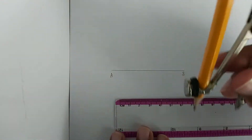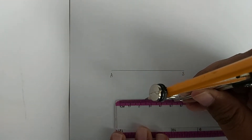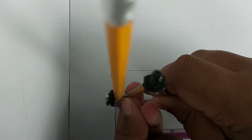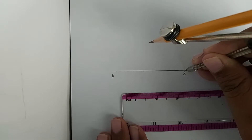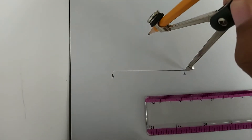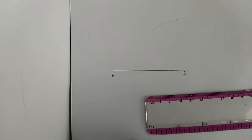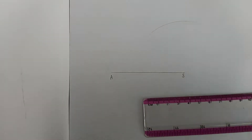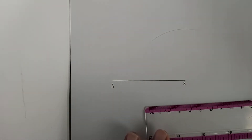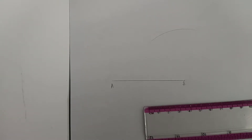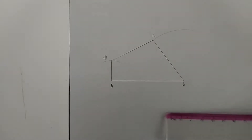BC is 50 mm, so I'm going to open to 50 on my compass and mark that off at point B. At this point you should already know how to construct the quadrilateral, so I'm just going to skip forward to after I finish constructing it.